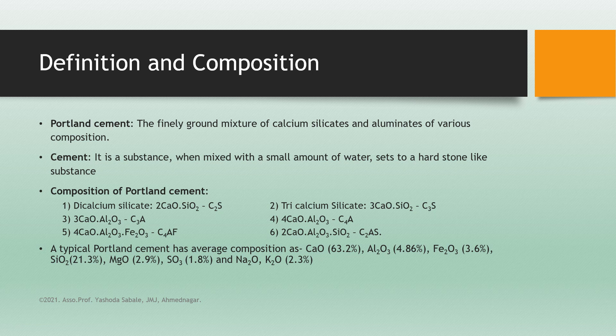Third one is 3CaO·Al₂O₃, that is tricalcium aluminate, abbreviated as C3A. Then tetracalcium aluminate, having formula 4CaO·Al₂O₃, symbolized as C4A. The fifth one is tetracalcium aluminoferrite, having formula 4CaO·Al₂O₃·Fe₂O₃, abbreviated as C4AF. The sixth one is 2CaO·Al₂O₃·SiO₂, abbreviated as C2As, that is dicalcium aluminosilicate.